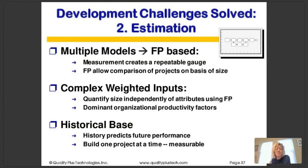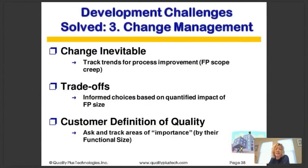Historical base is key — history predicts future performance better than theoretical models. We can build up a measurable historic base of projects by recording data one project at a time. For challenge number three, change management: we can track and transfer process improvement in terms of function point scope creep, and make informed choices based on the quantified impact of function point size.